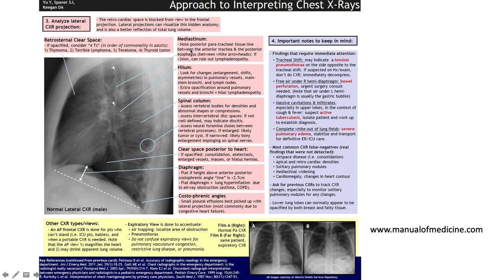Regarding the mediastinum, note the posterior paratracheal tissue alignment between the anterior trachea and the posterior oesophagus. If it's less than three millimetres, you can rule out lymphadenopathy. Look at the hilum for enlargement, shifts, or asymmetries in pulmonary vessels, main stem bronchi, and lymph nodes. Assess the vertebral bodies for density, abnormal shape, or compressions, and check the intervertebral disc space — if not well defined, this may indicate discitis.